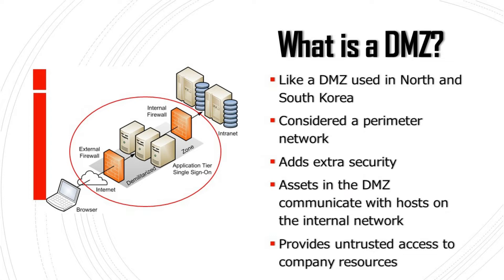So we put a DMZ between that and will keep various things, such as web and email servers — we'll go into what's inside a little bit later. The assets in a DMZ will be able to communicate with other things on the internal network, but this is monitored and significantly restricted. Ultimately, the main goal of a DMZ is to provide untrusted internet connections access to resources while still making sure the internal network is kept safe in the process.